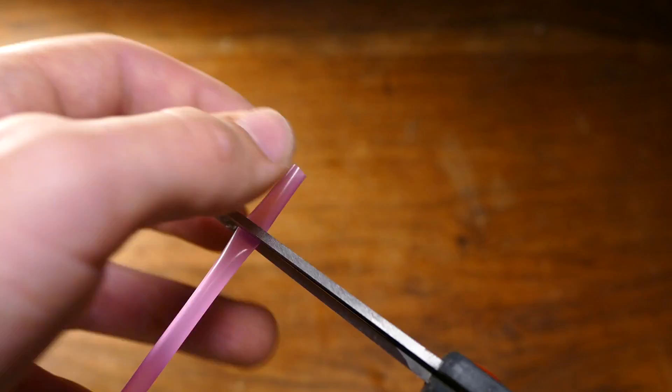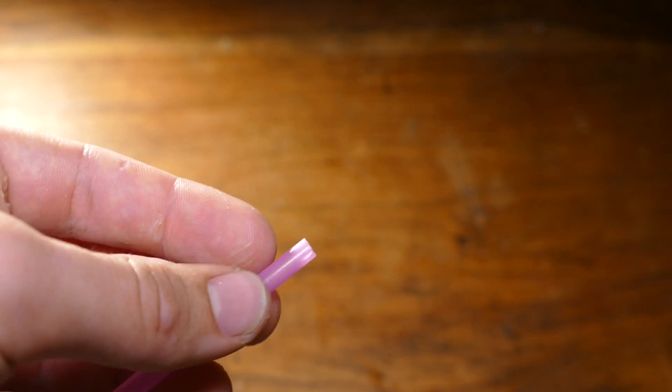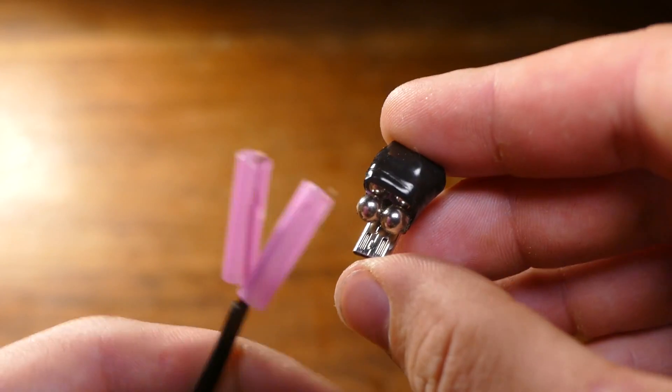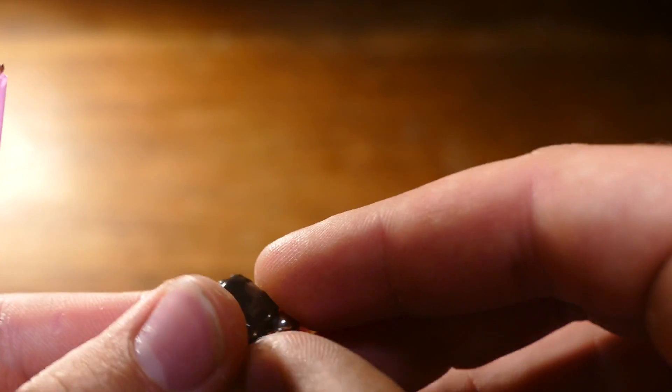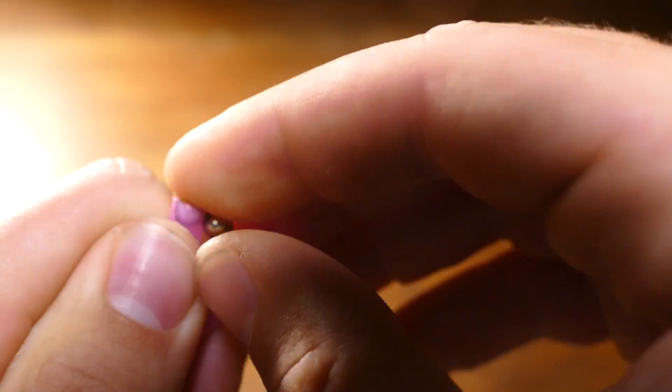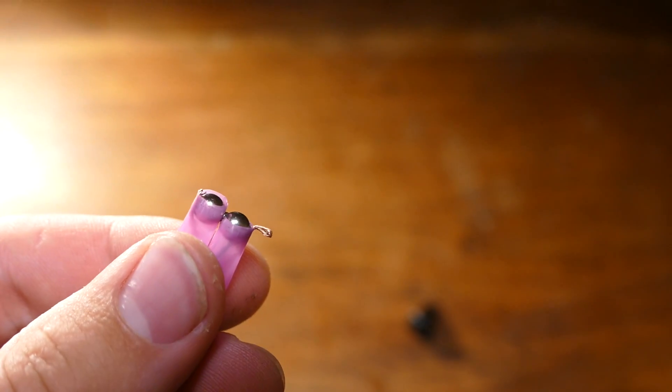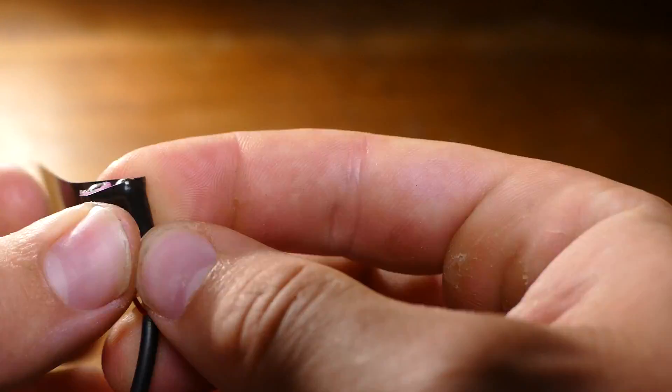Now we just need to do basically the same thing to the other end of the wire. However before you wedge the magnets into the straws make sure they line up with the other magnets on the end like this. Also make sure the black wire goes to black and the red to red or else it won't charge. When everything's done it should look like this.